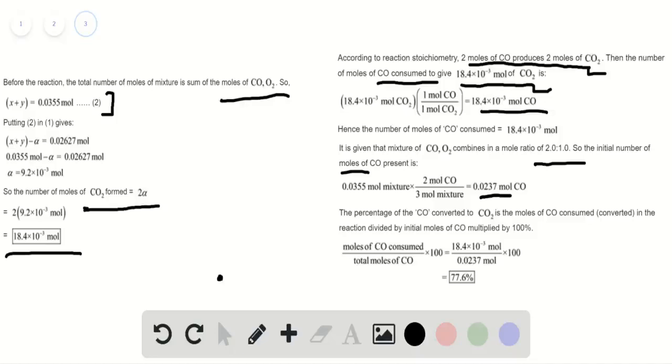The percentage of carbon monoxide converted is the moles of CO consumed divided by the initial moles of CO, multiplied by 100, which is 77.6 percent.